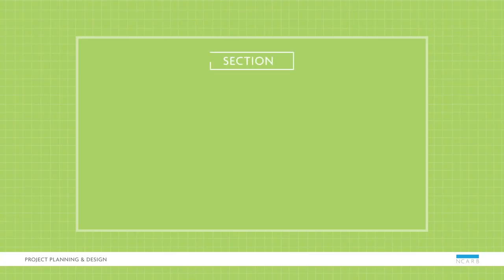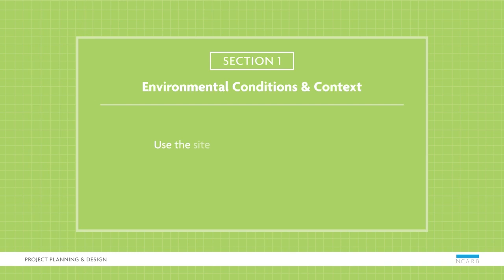In the Environmental Conditions and Context section, you'll use the site information gathered in the programming and analysis phase of a project to plan the site and environmental aspects of a project. Let's look at a sample question.